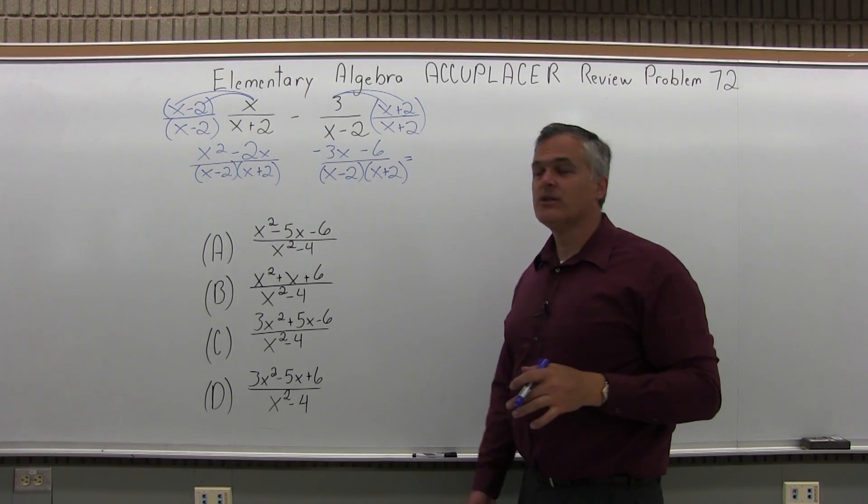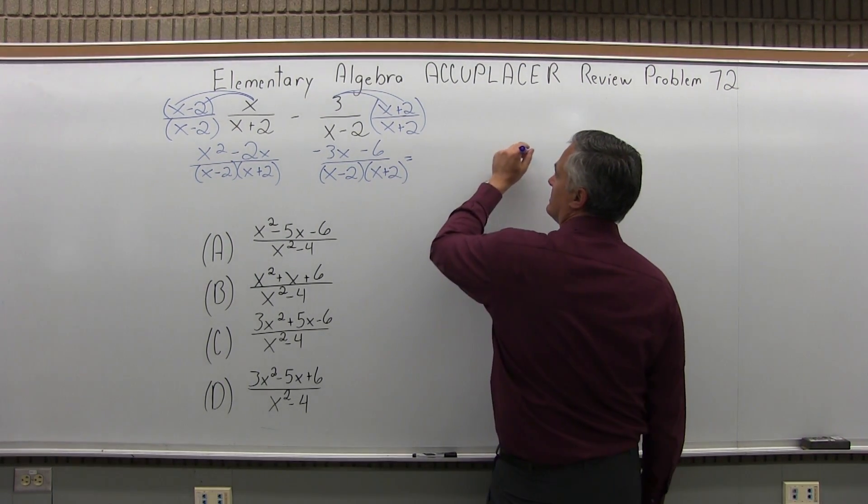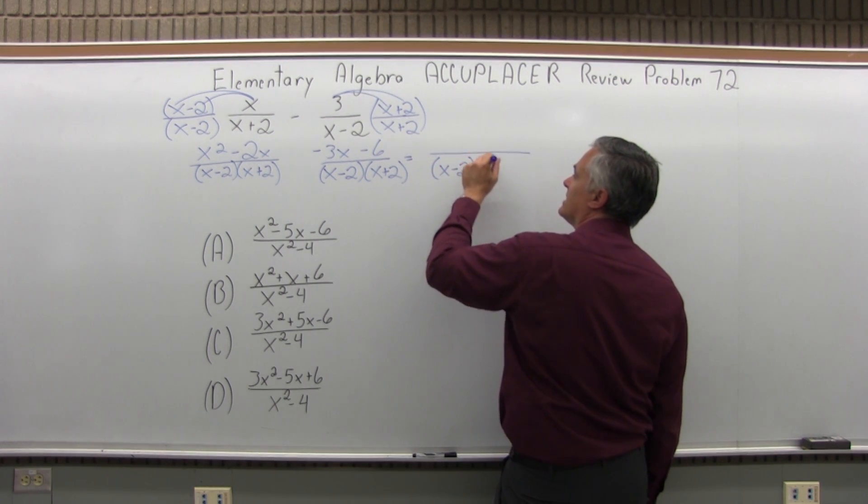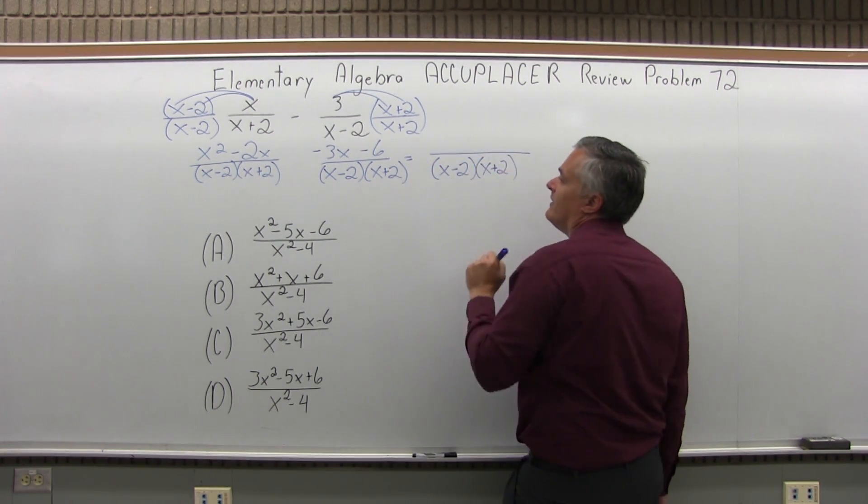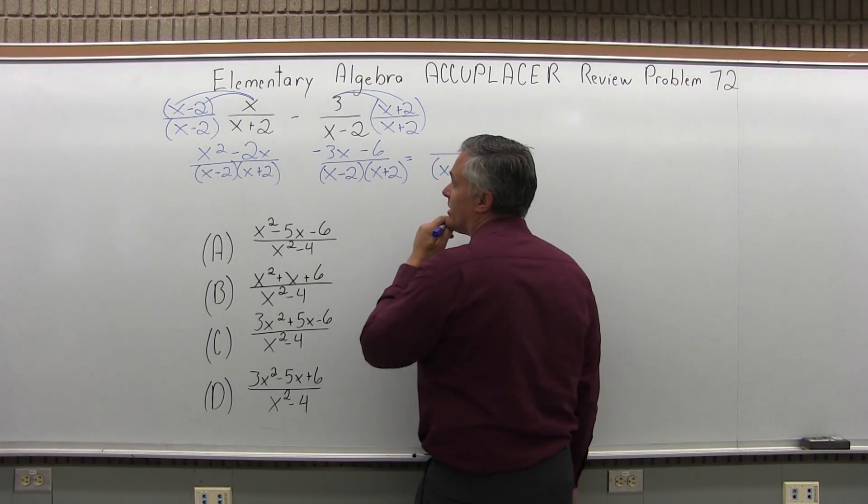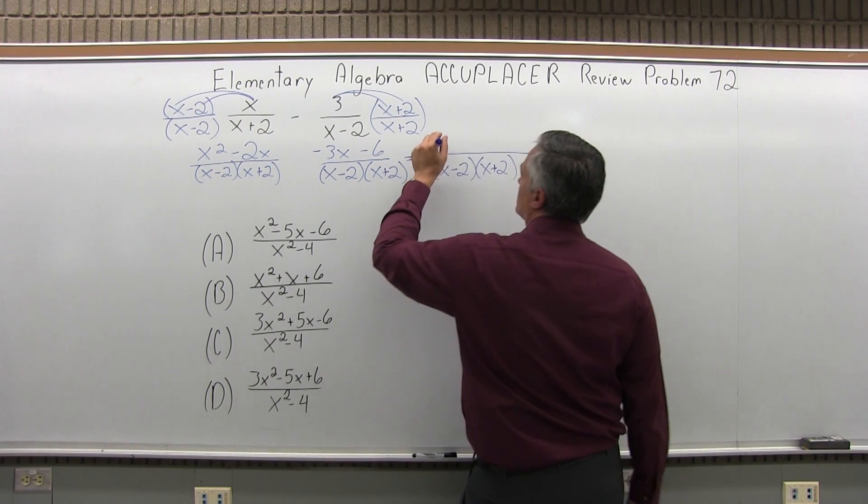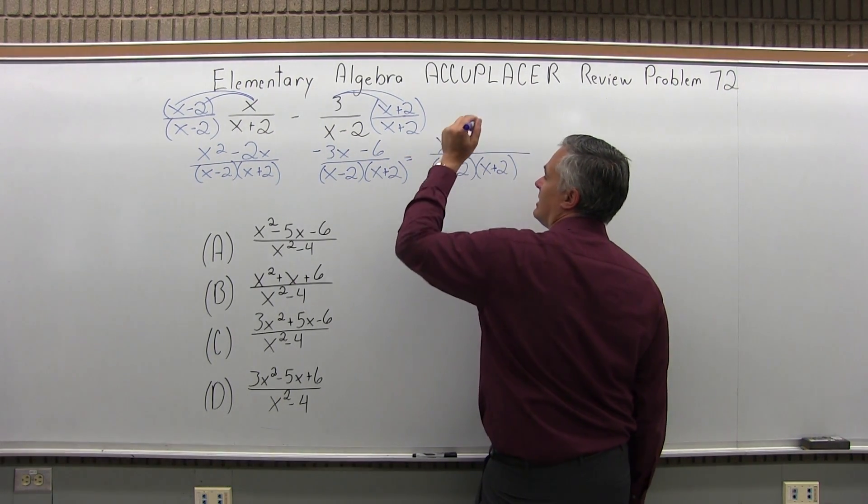Now that I have the same denominators, I can combine the numerators. So my common denominator is x minus 2 times x plus 2. Now when I combine the numerators, I have an x squared and no other x squared. So x squared will come over by itself.